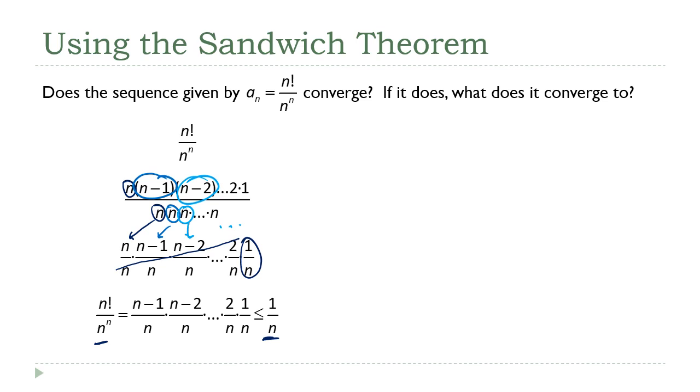Hopefully, now you see how this is starting to feel like a sandwich theorem, squeeze theorem situation. So what this means is we kind of eliminate the middle bit here. A sub n is less than or equal to 1 over n and is greater than or equal to 0 because n is always positive. Now, we can apply the squeeze theorem.